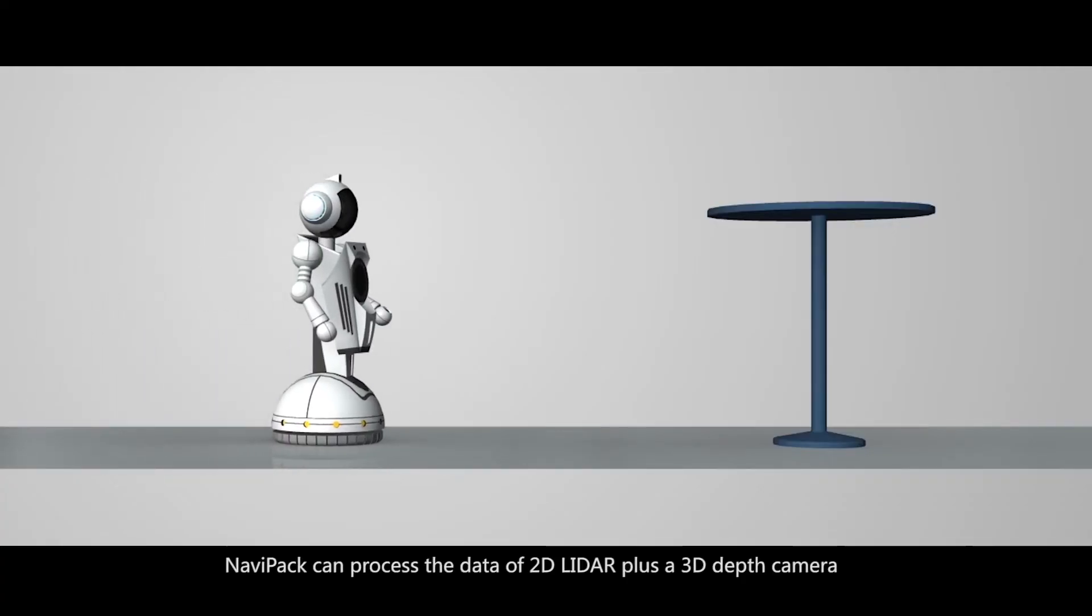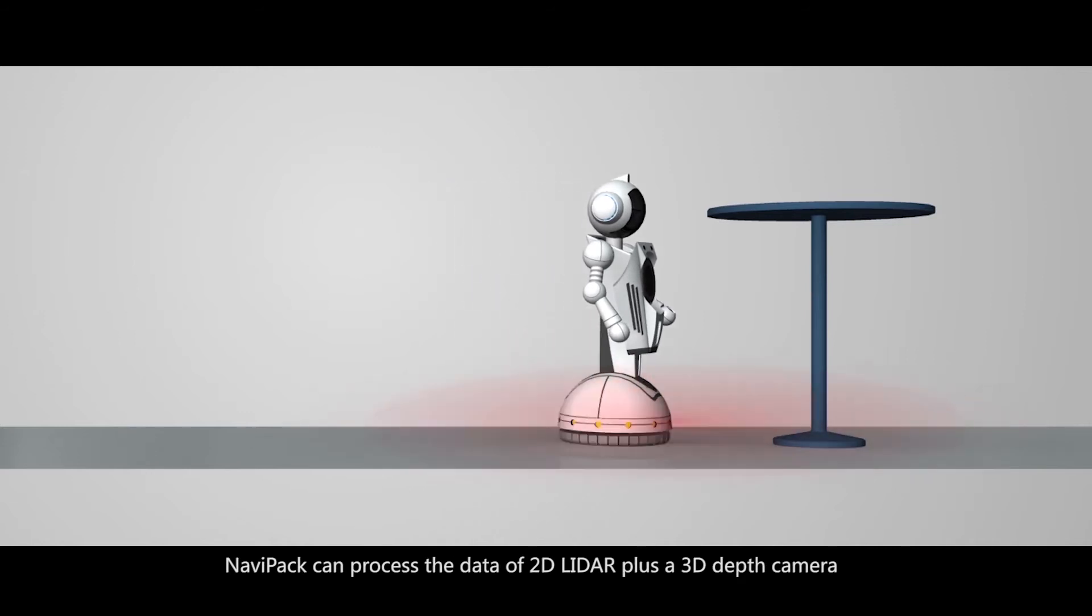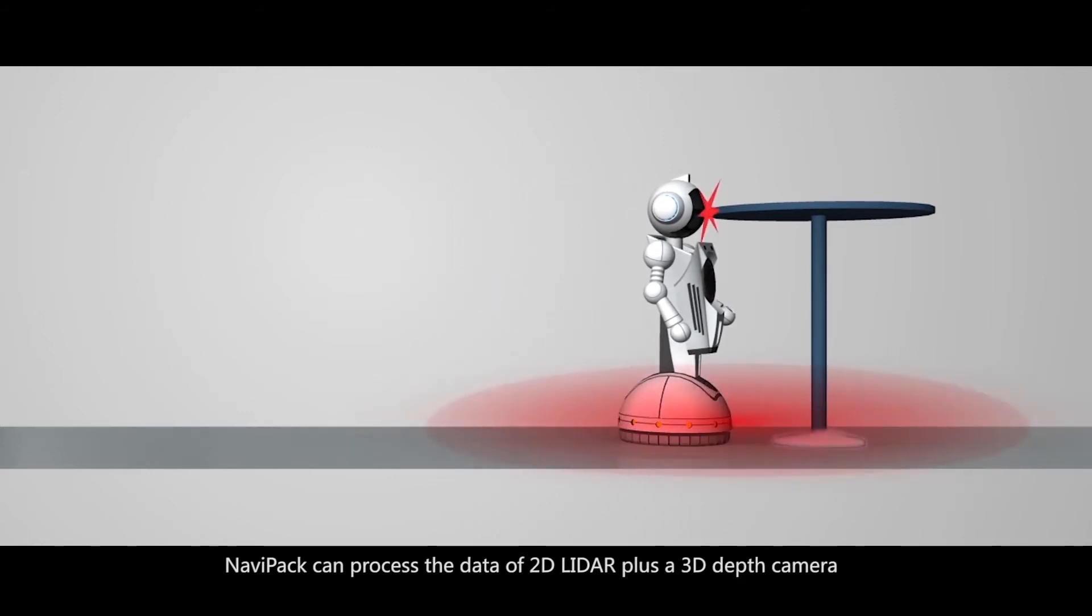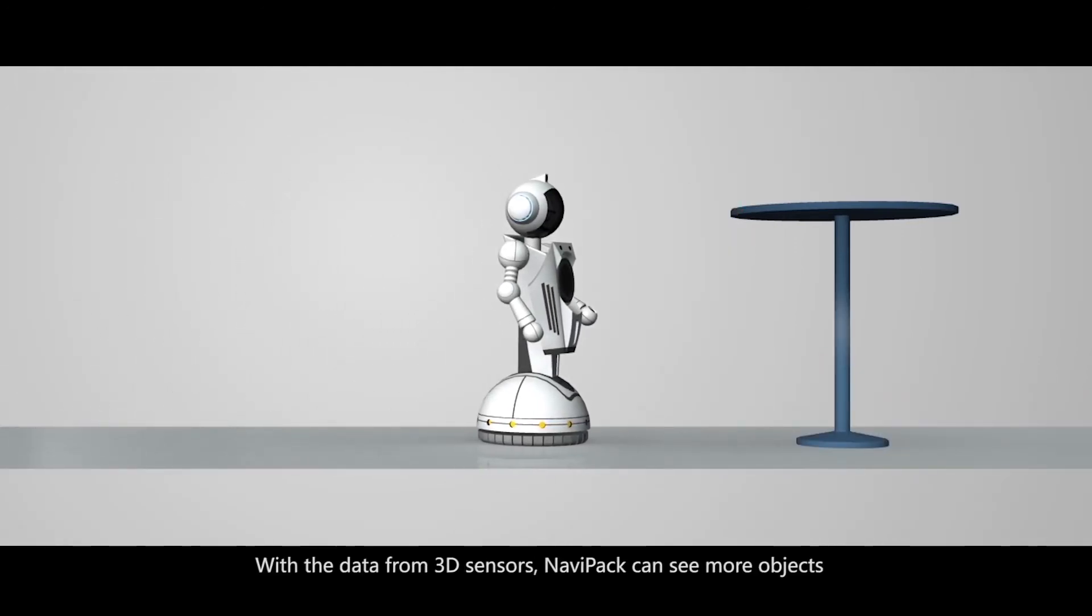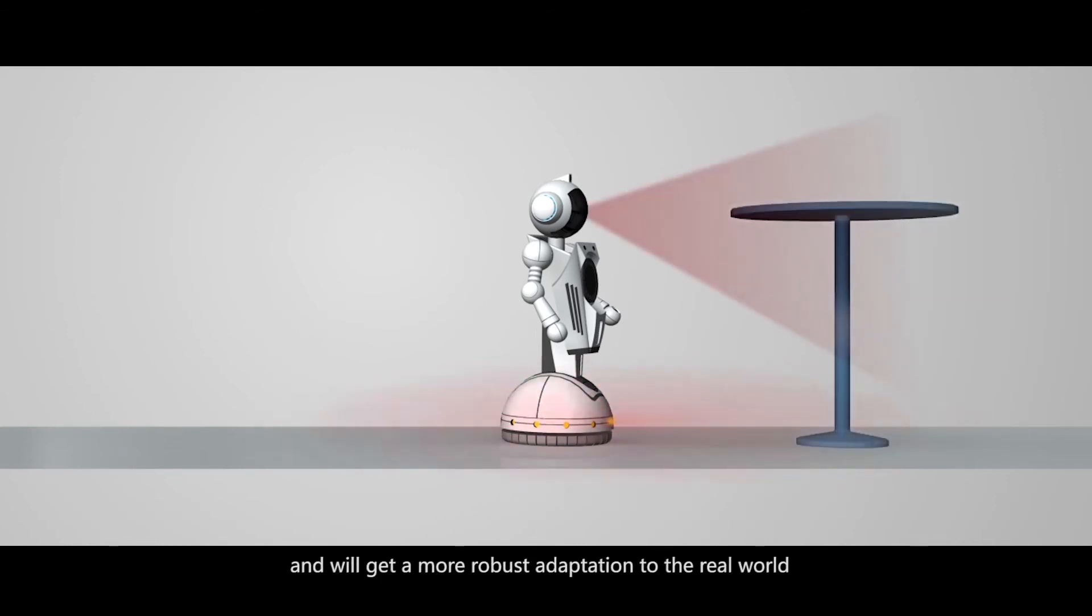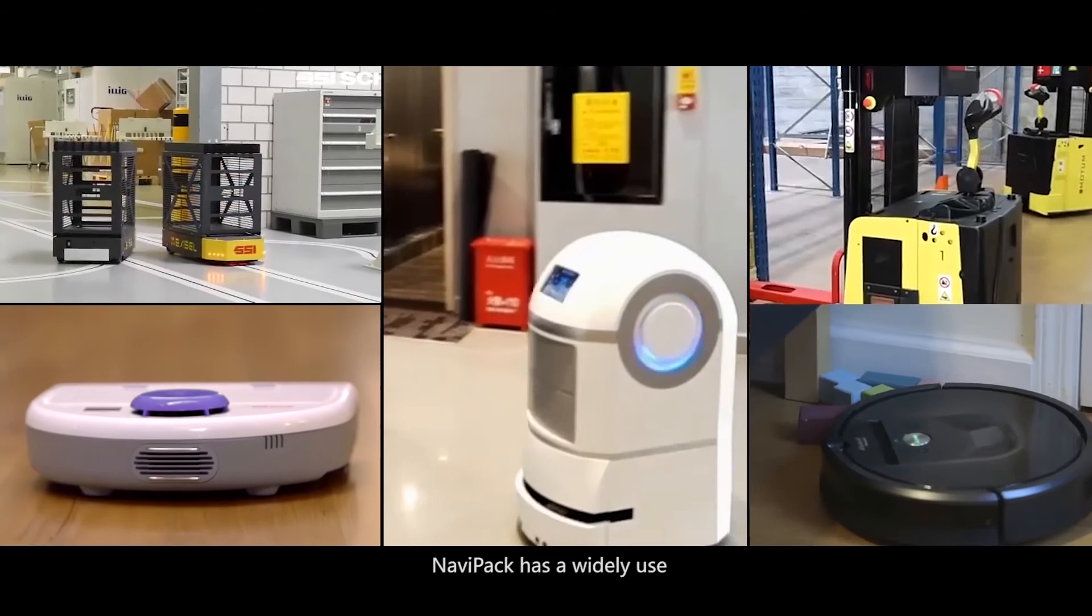NaviPack can process data from 2D LiDAR plus a 3D depth camera, or use 3D LiDAR directly. With data from 3D sensors, NaviPack can see more objects and achieves more robust adaptation to the real world.